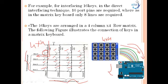For detecting a key press, the keyboard uses a scanning technique where each row of the matrix is pulled low and the columns are read. After reading the status of each column corresponding to a row, the row is pulled high and the next row is pulled low. This process repeats until all rows and columns are scanned. When a row is low and a key connected to it is pressed, reading the corresponding column gives logic zero.